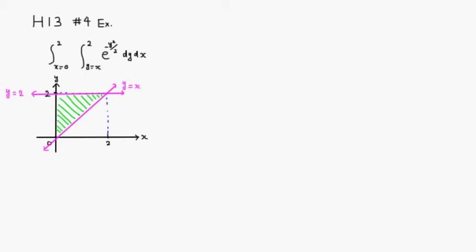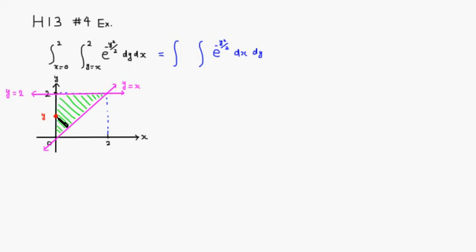So we're going to switch the order of integration. This is going to be a double integral with exactly the same integrand: e to the negative y squared over 2. Instead, we're doing dx first, then dy. We're fixing a y value — x starts from the y-axis, which is x equals 0, and goes all the way to the straight line y equals x, which means x equals y.